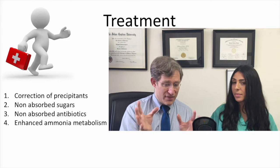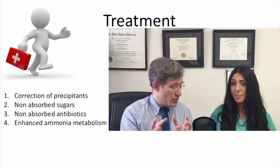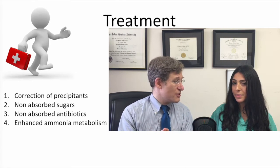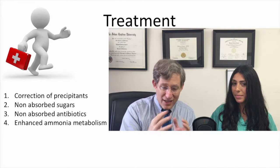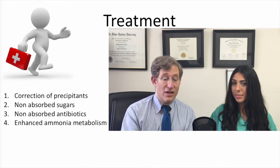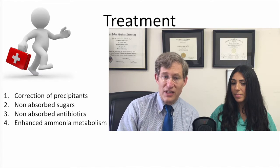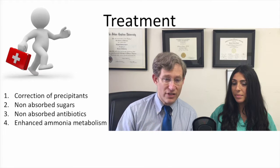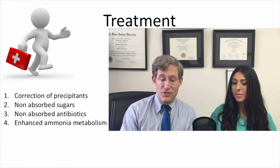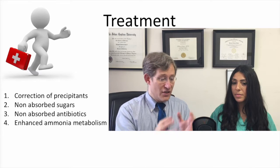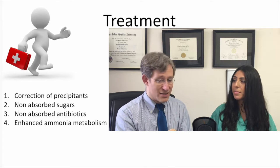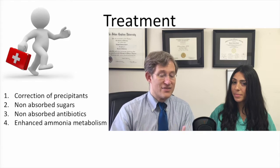We want to take the bulk of this video and focus on how to treat the patient who presents with altered mental status in the setting of liver dysfunction. The patient with that constellation needs to be evaluated globally — if we don't treat their underlying pneumonia, SBP, urinary infection, or NSTEMI, that patient won't get better. The basic categories of therapy all have in common decreasing the global burden of ammonia: non-absorbed sugars, non-absorbed antibiotics, and agents that enhance ammonia metabolism.